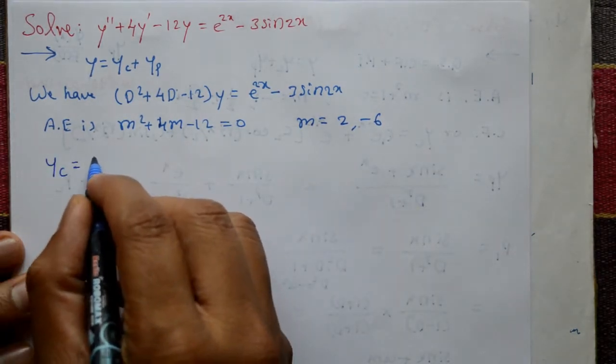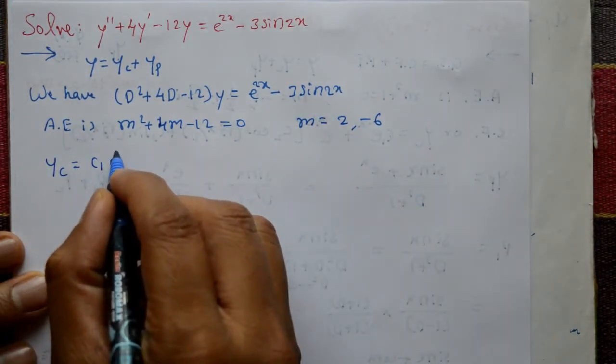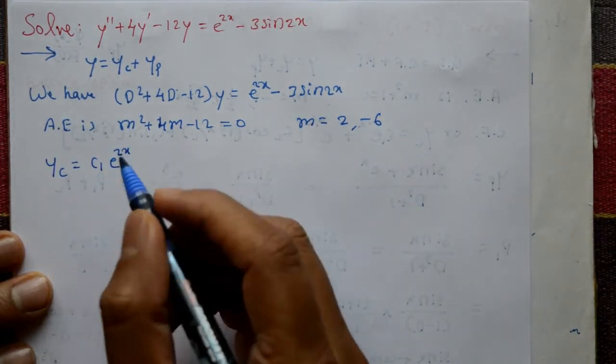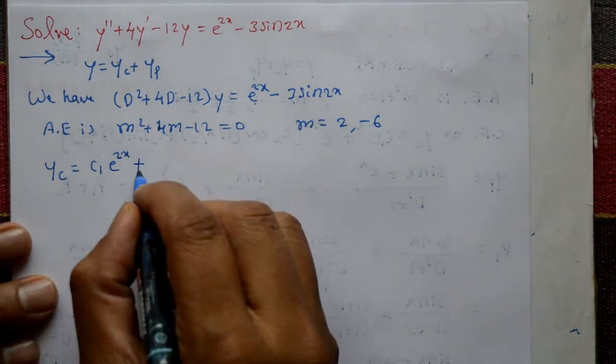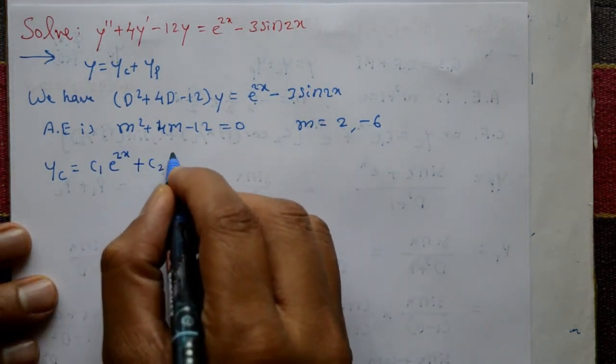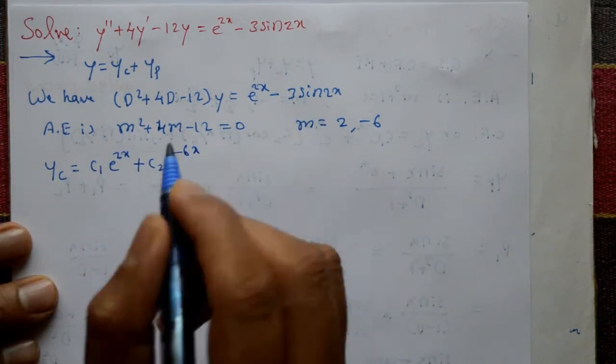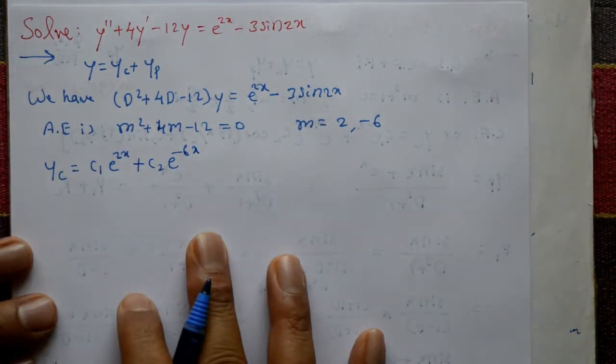Since the roots are different, the complementary function is C₁·e^(2x) + C₂·e^(-6x). This is the complementary function.